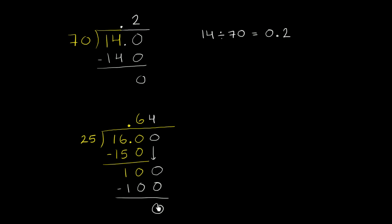And we are done. We have nothing left to keep dividing with. So we can say that 16 divided by 25 is equal to 0.64.